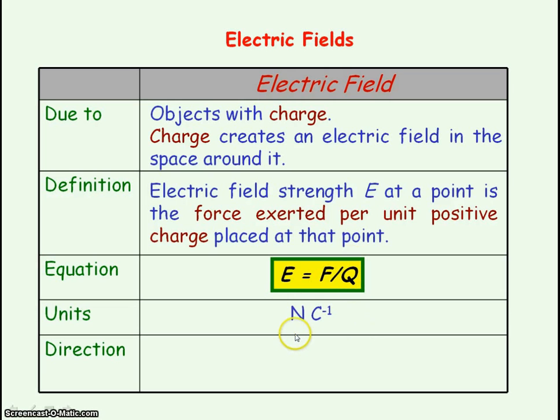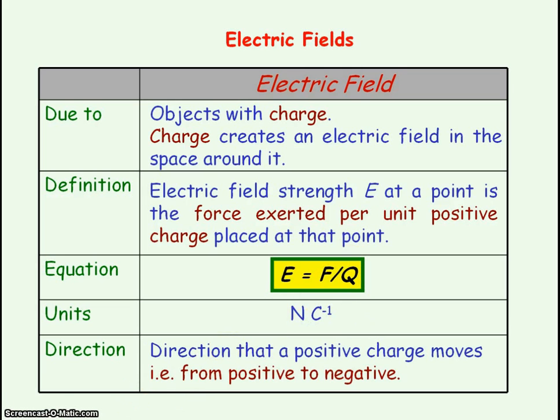The direction of electric field strength - it's a vector quantity so it has direction - is the direction in which a positive charge would move, and that is from positive to negative.